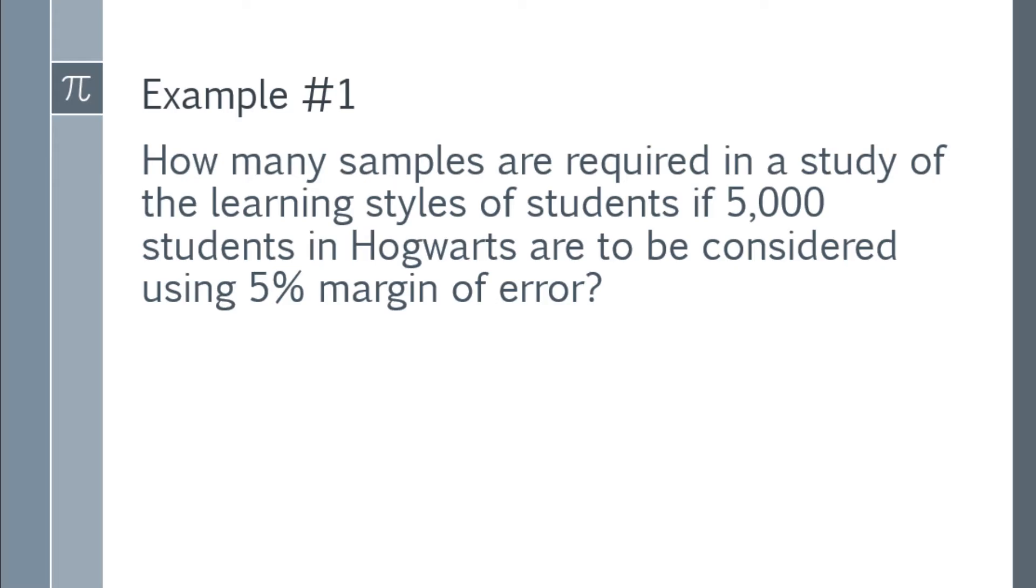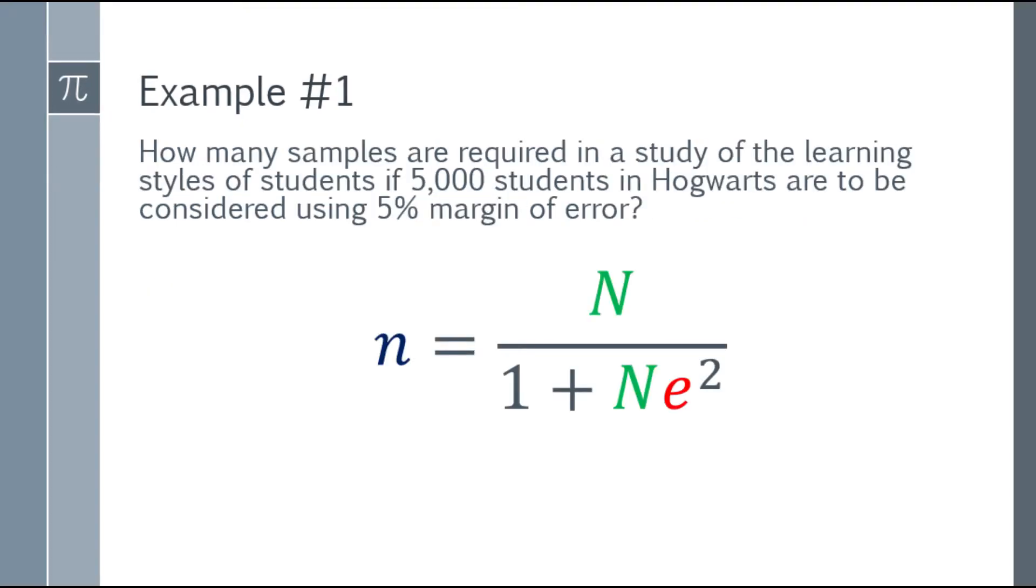And the margin of error, that will go to the letter e. So 5%, you have to transform it to decimal. Divide by 100 and remove the percent sign, you'll get 0.05. So let's write the formula, which is small letter n is equal to capital N over the quantity 1 plus N E square.